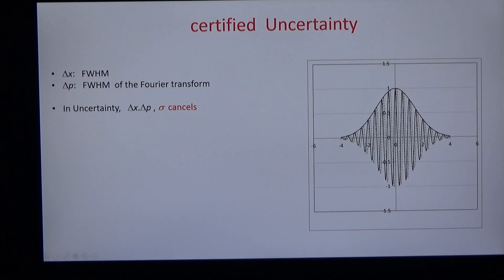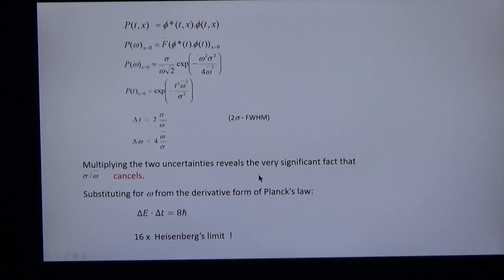I move now to uncertainty. At times zero, the full width half maximum is the uncertainty in position. The Fourier transform of a Gaussian is Gaussian. So the full width half maximum of the Fourier transform is the uncertainty in momentum. And the important fact is this, that when you multiply the two uncertainties, sigma cancels. The dual uncertainty is a physical property independent of initial conditions.